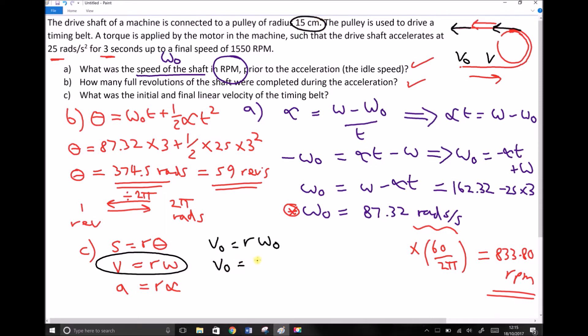So v zero is 0.15 times omega zero, which is 87.32, giving us an initial linear velocity of 13.1 meters per second.